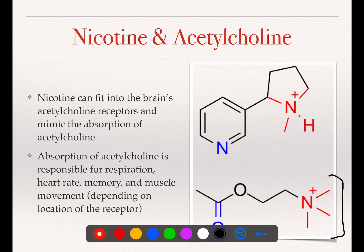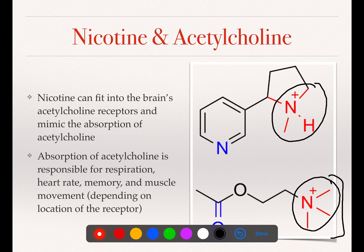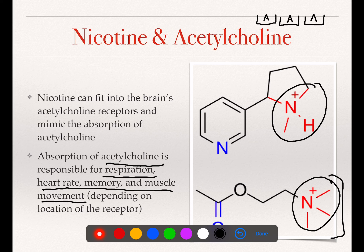Here is the acetylcholine molecule. It's this portion of the nicotine molecule that somewhat matches up with the acetylcholine molecule. Acetylcholine is a molecule, like adenosine, that our brains naturally produce, and we have receptors for it just like adenosine. We have receptors inside our brain designed for acetylcholine. When we absorb acetylcholine, that absorption leads to successful respiration, heart rate, memory, and muscle movement. These are more significant biological functions than tiredness — this is keeping your heart beating and your lungs breathing, really important things. When you consume nicotine, it fits into these acetylcholine receptors, much like caffeine fits into the adenosine receptors.